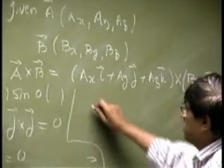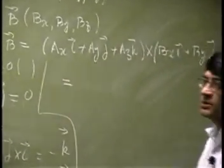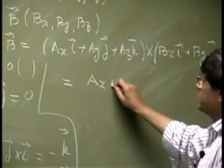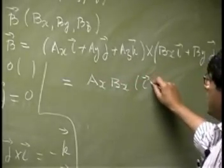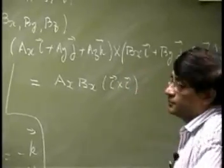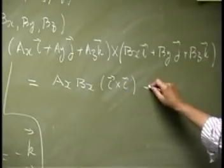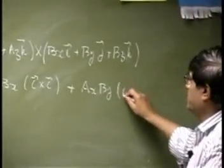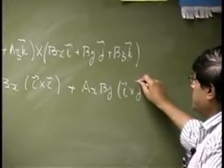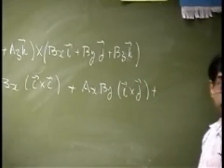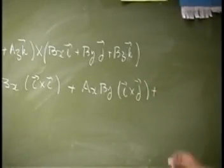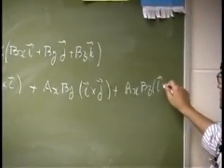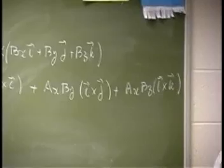Now if I go through the whole product, that means you take the first one here. You will have Ax Bx i cross i, then you are going to have Ax By i cross j, and you are going to have Ax Bz i cross k. That is the first product.